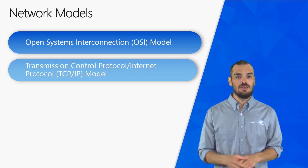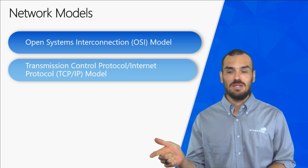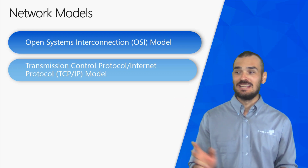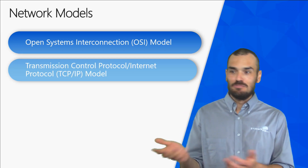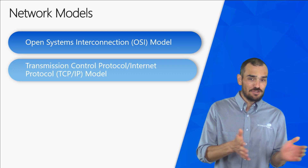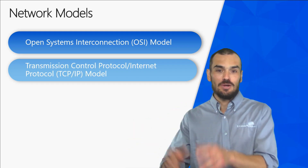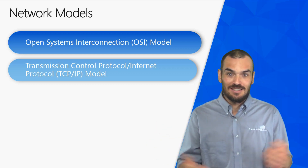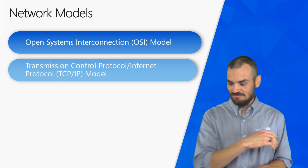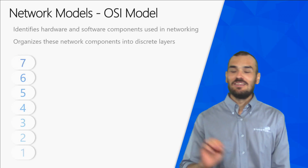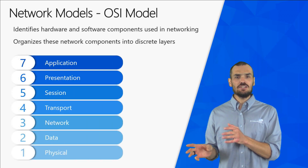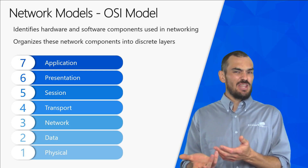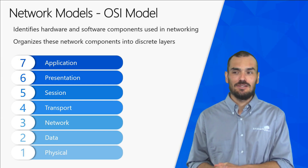The two network models focused on in the Network Plus course are the OSI model and the TCP/IP model. You might wonder why we need two of them — it's kind of like VHS versus Beta, Blu-ray versus HD DVD, Target versus Walmart. Some vendors and government entities preferred OSI; others preferred TCP/IP. They're both ultimately talking about the same thing. We're going to start with OSI because the TCP/IP model is considered a condensed version of it, so understanding OSI first hopefully makes TCP/IP easier.